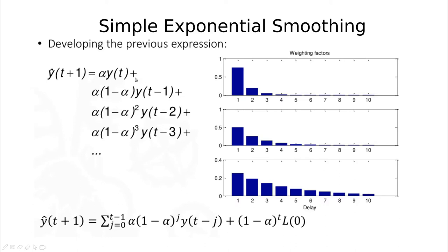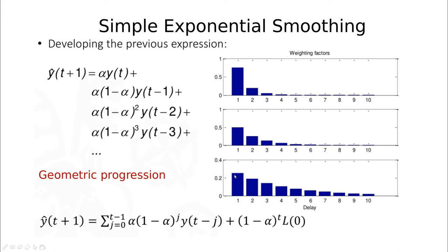The previous value can be written in terms of t minus 1: alpha times the last observation plus alpha times (1 minus alpha) times t minus 1, and you can proceed further — the coefficient becomes alpha times (1 minus alpha) squared, then alpha times (1 minus alpha) cubed, and so on. This is a geometric progression. Since alpha is less than 1, (1 minus alpha) is also less than 1, so each coefficient is smaller than the one before. If alpha is large, the weights decrease very fast; for intermediate values they decrease slowly; if alpha is close to 0, the series is smoother but almost stuck on the last observation. We have to balance between those extremes.